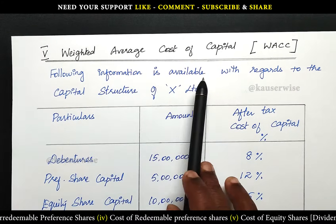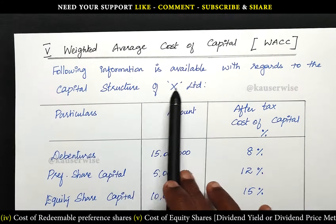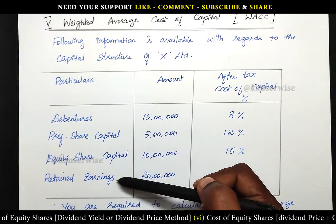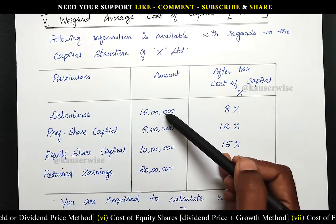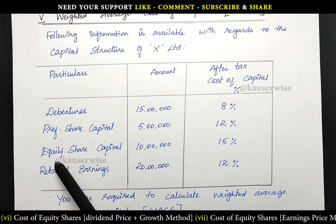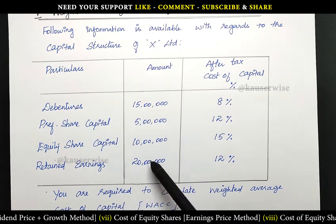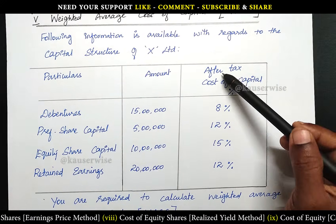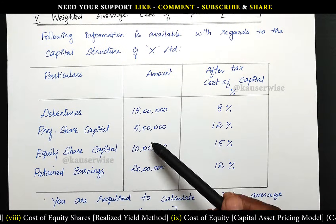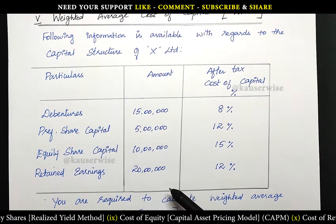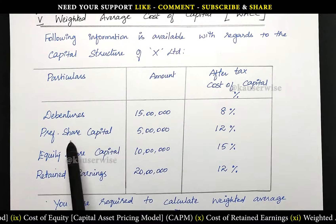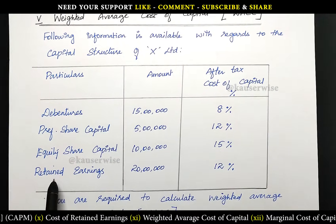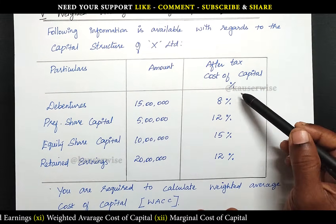Following information is available with regards to the capital structure of X Limited. The capital structure is: debentures 15 lakhs, preference share capital 5 lakhs, equity share capital 10 lakhs, retained earnings 20 lakhs. This is the present capital structure, and they have given the after-tax cost of capital for each component: debentures 8%, preference share capital 12%, equity share capital 15%, retained earnings 12%.